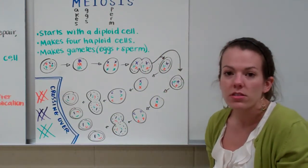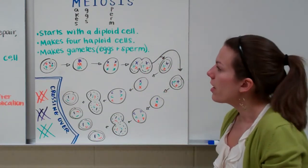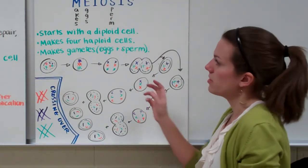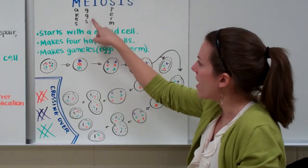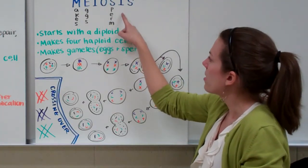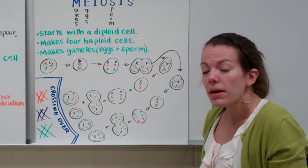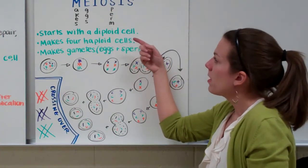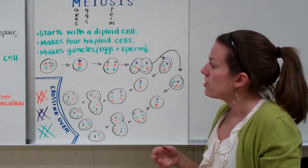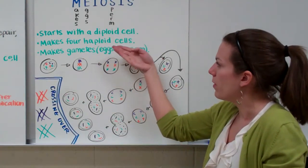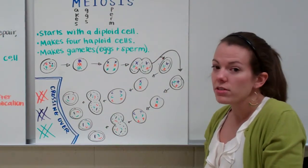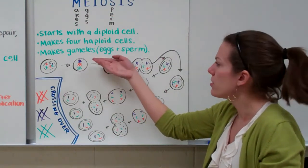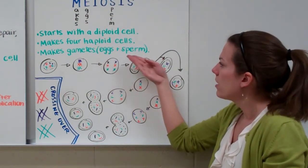Now for meiosis, the other form of cell division. Just like we labeled the letters of mitosis, meiosis makes eggs and sperm. Just like mitosis, meiosis also starts with a diploid cell. Unlike mitosis, meiosis makes four haploid cells. Meiosis doesn't make body cells — it makes gametes, which is a fancy word for eggs and sperm.